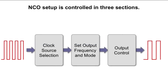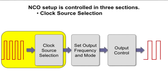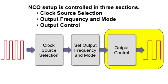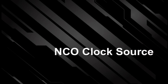The NCO module has three sections that must be set up to use this peripheral: the clock source selection, the output frequency and mode selections, and the output control settings. First, let's look at the selection of the NCO clock source.